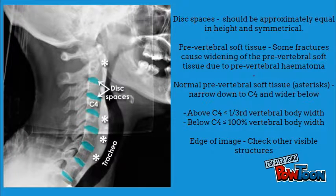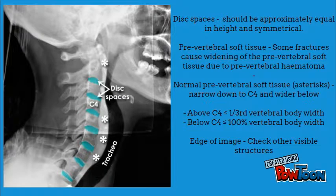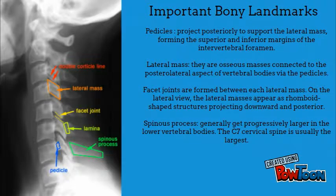The disc spaces should be approximately equal in height and symmetrical. Inspect the pre-vertebral soft tissue — some fractures cause widening of the pre-vertebral soft tissue due to hematoma. Important bony landmarks are the pedicles, lateral masses, facet joints, and spinous processes.